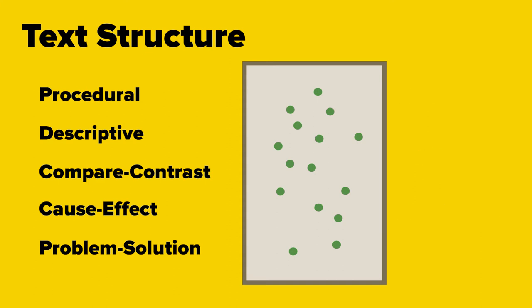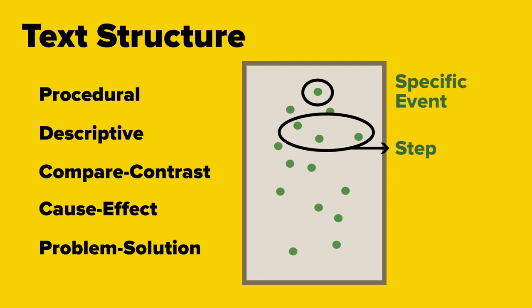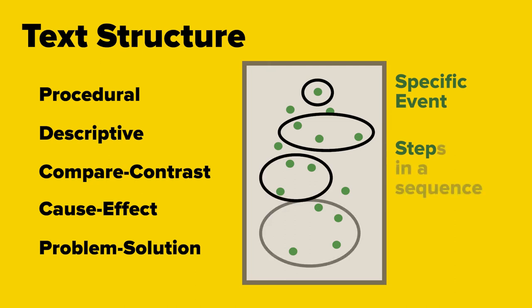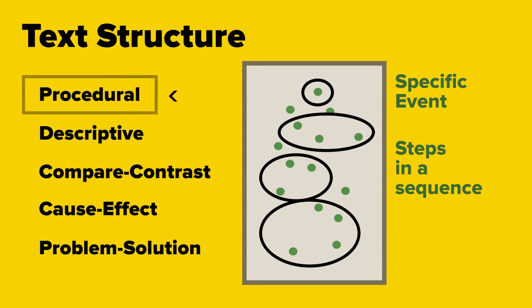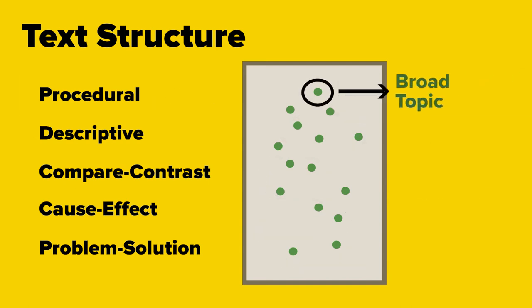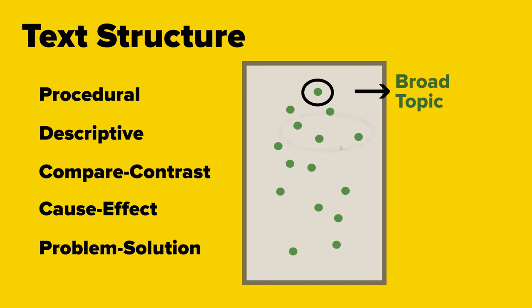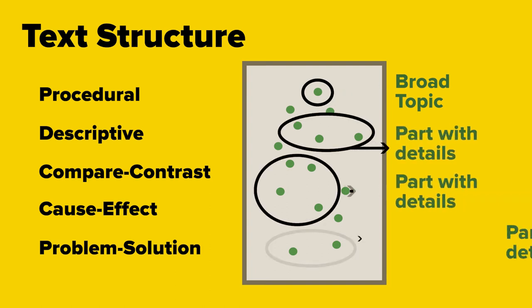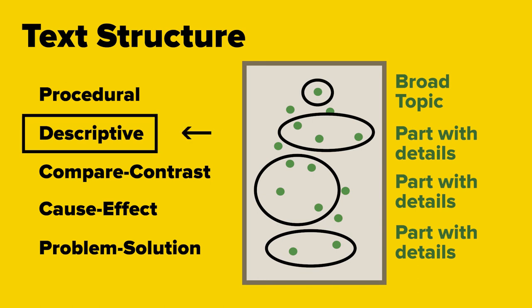For example, if the introduction names an event, and then the body paragraphs each reveal a step or phase, and all the transitions identify the order it occurred, it must be following a procedural text structure. But if it starts by introducing a broad topic, and then each body paragraph explains just one significant part or a smaller facet of that big topic, then it must be following a descriptive text structure.